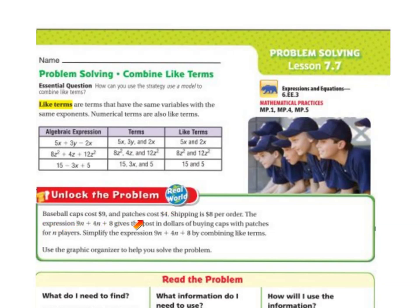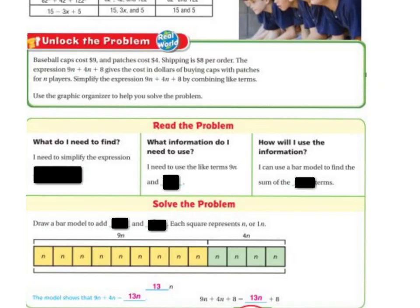So let's unlock the problem. Baseball caps cost $9 and patches cost $4. Shipping is $8 per order. The expression 9n plus 4n plus 8 gives the cost in dollars of buying caps with patches for n players. So simplify the expression 9n plus 4n plus 8 by combining like terms. So first of all, what do I need to find to simplify the expression? Well what I need to find is 9n plus 4n plus 8.